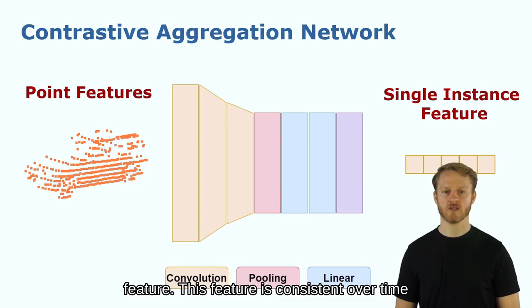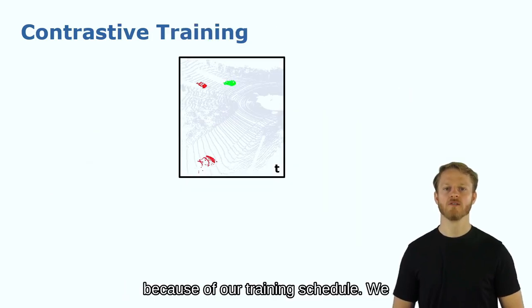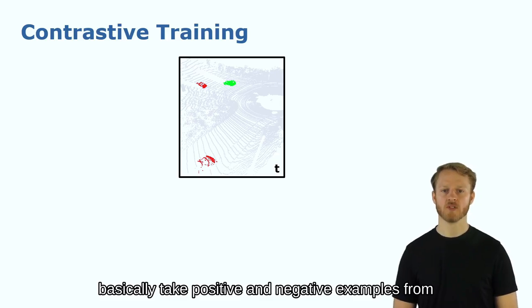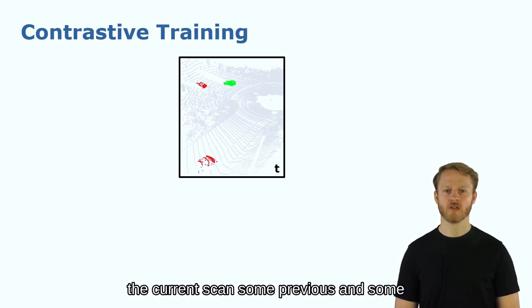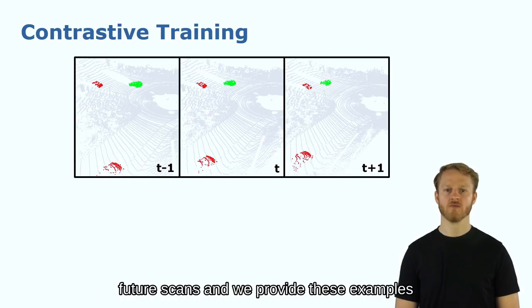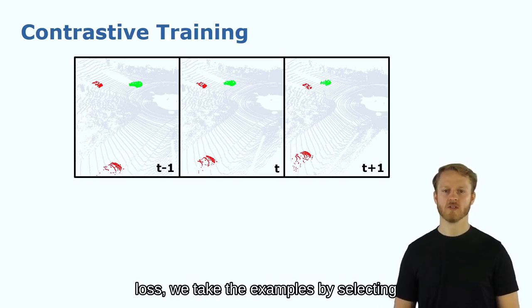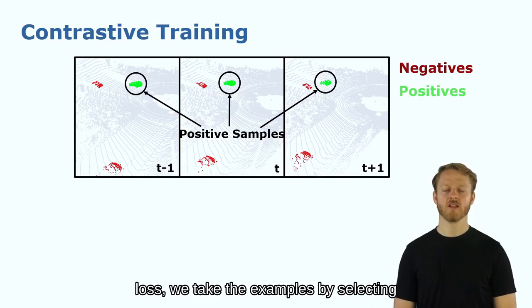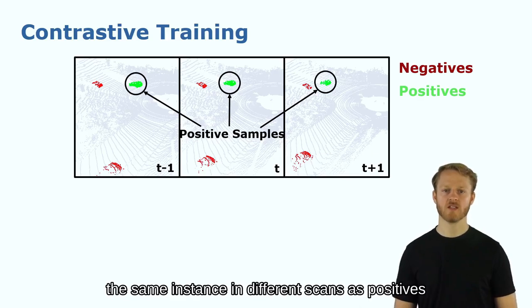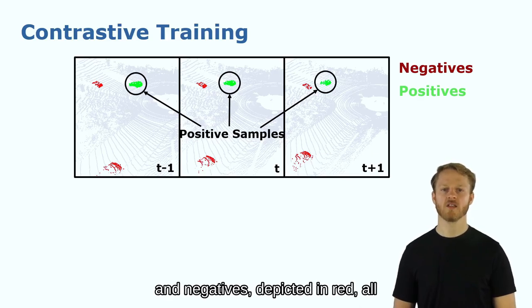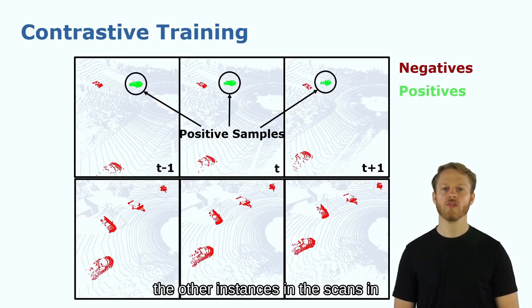This feature is consistent over time because of our training schedule. We basically take positive and negative examples from the current scan, some previous and some future scans, and we provide these examples to the supervised contrastive loss. We take the examples by selecting the same instance in different scans as positives and as negatives depicted in red all the other instances in the scans in a batch.